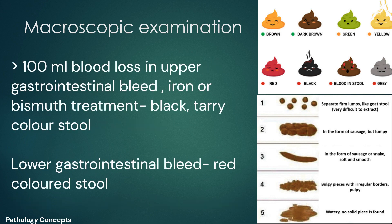If more than 100 ml of blood is lost from the upper gastrointestinal system, black tarry color stool is observed. Besides bleeding, black color stool may also be observed due to iron or bismuth treatment. A red color stool is observed in lower gastrointestinal tract bleeding.